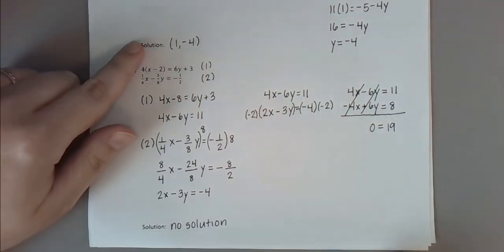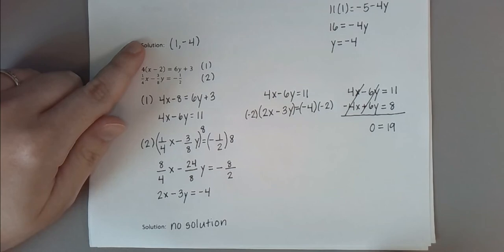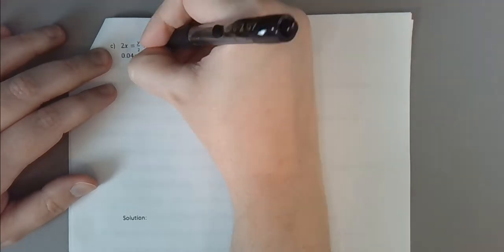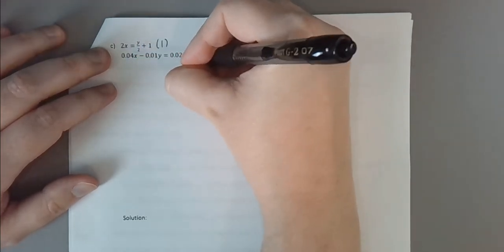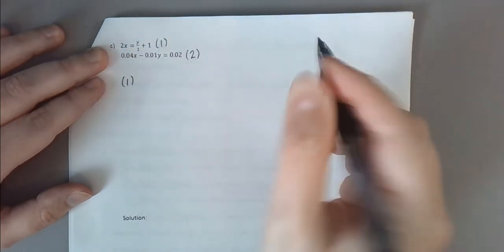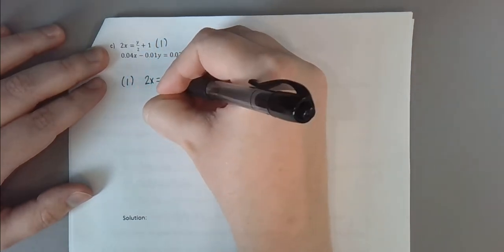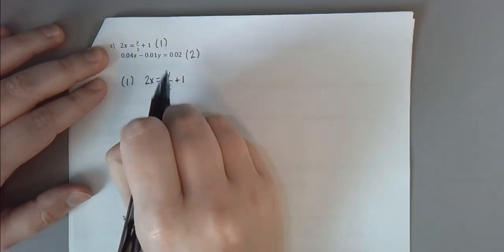We've seen a consistent independent system with one solution, and an inconsistent one. Now let's look at the special case: consistent but dependent. Here we have a fraction in the first equation and decimals in the second. Label them one and two. For equation one: multiply both sides by 2 to clear the fraction. The left side becomes 4x; the right side distributes to y plus 2. Move y to the left: 4x minus y equals 2.